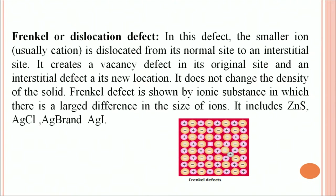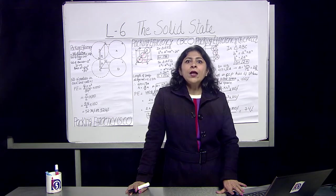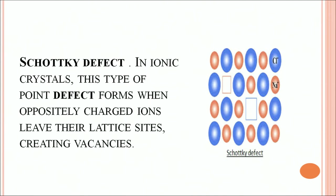Frenkel defect does not change the density of the solid. It is shown by ionic substances in which there is a large difference in the size of ions — cations are usually smaller and anions are larger. In Schottky defect, in an ionic crystal, oppositely charged ions leave their lattice sites, creating vacancies. For example, one cation and one anion (sodium and chloride) are both missing, maintaining electrical neutrality. This is the Schottky defect.